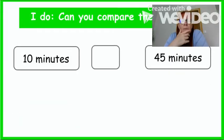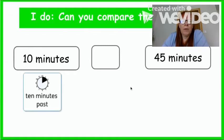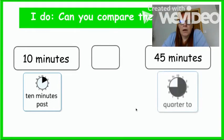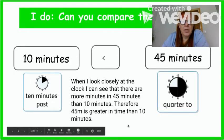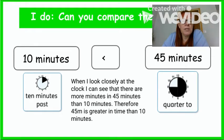Minutes and hours. Can you compare these times: 10 minutes and 45 minutes? If I use my homemade clock, 10 minutes looks like a small amount has gone by. And 45 minutes looks like a greater amount of time. So, 45 minutes is larger than 10 minutes. Using the greater than and less than symbol — the crocodile always eats the largest number — it shows that 10 minutes is less than 45 minutes.